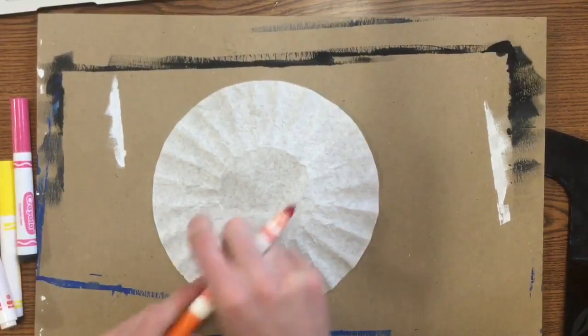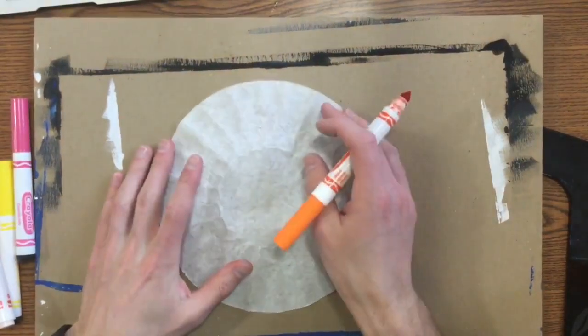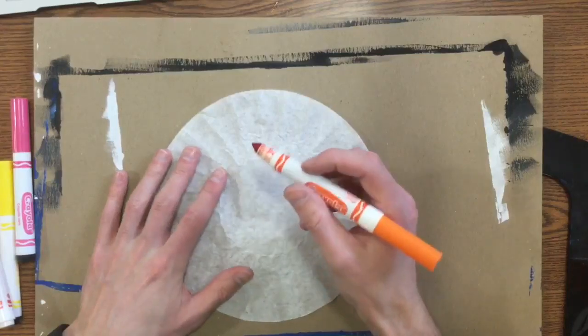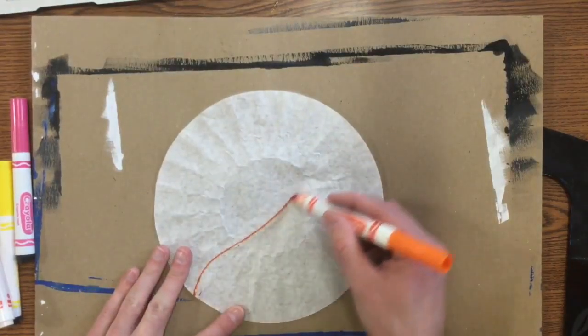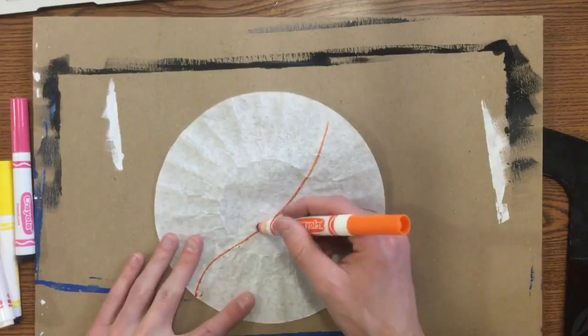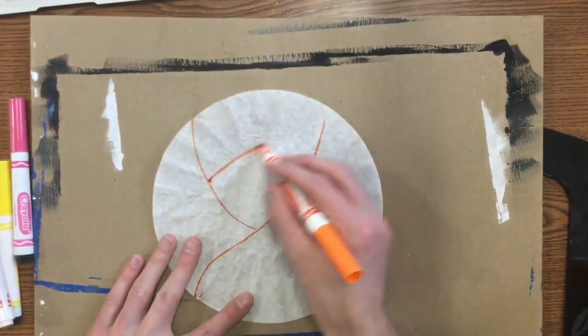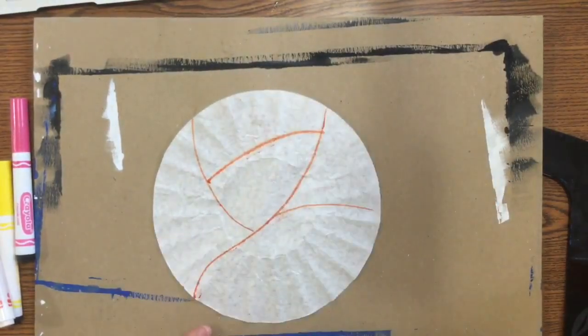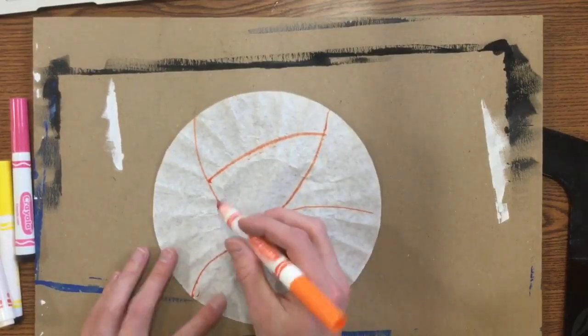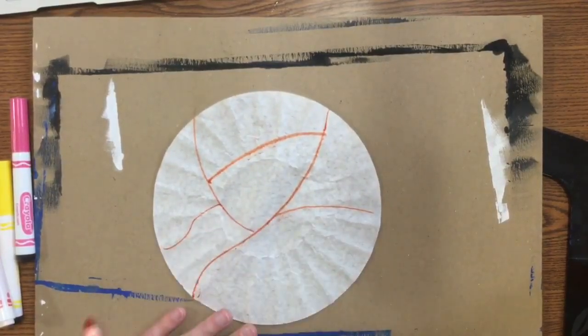You're going to be drawing a design all over this coffee filter. It needs to be completely colored. I would start off by drawing some lines across it. What this does is it gives me some shapes, so that way I can go in and add some color and patterns to these.